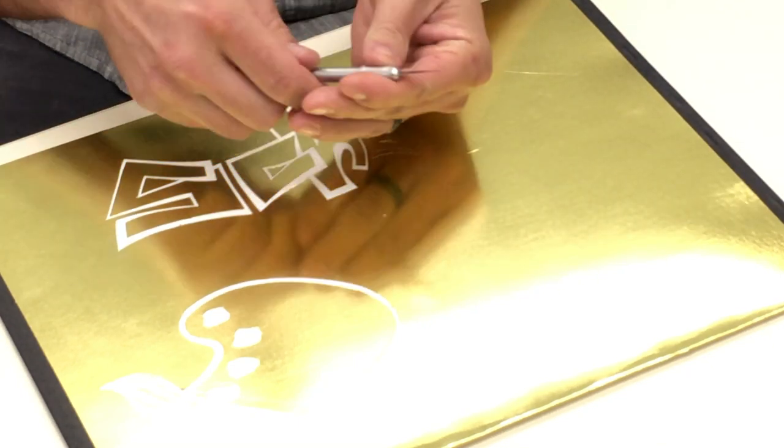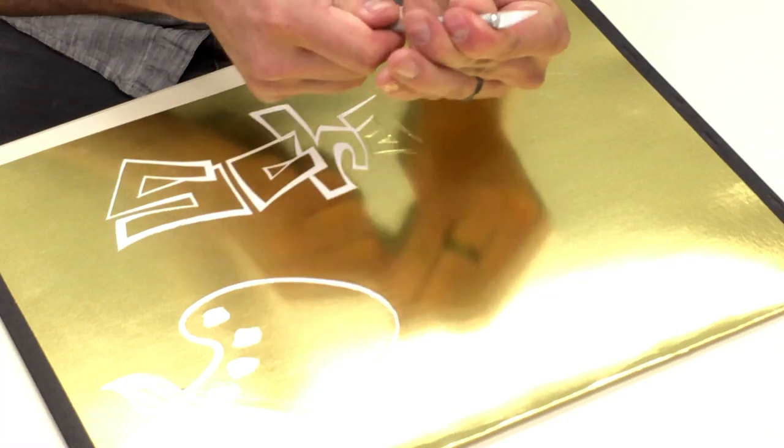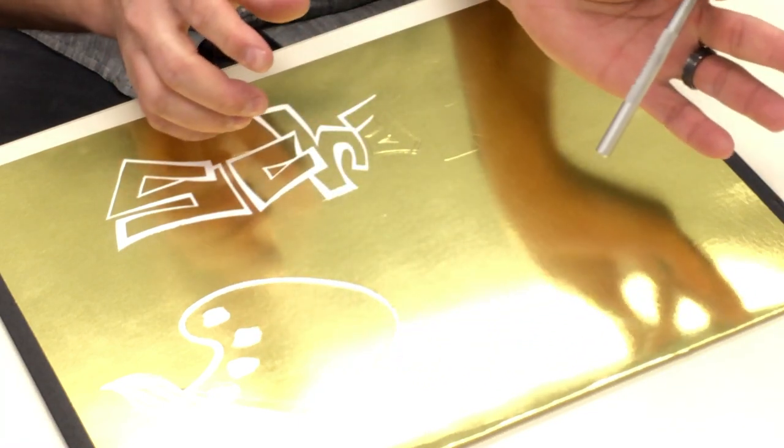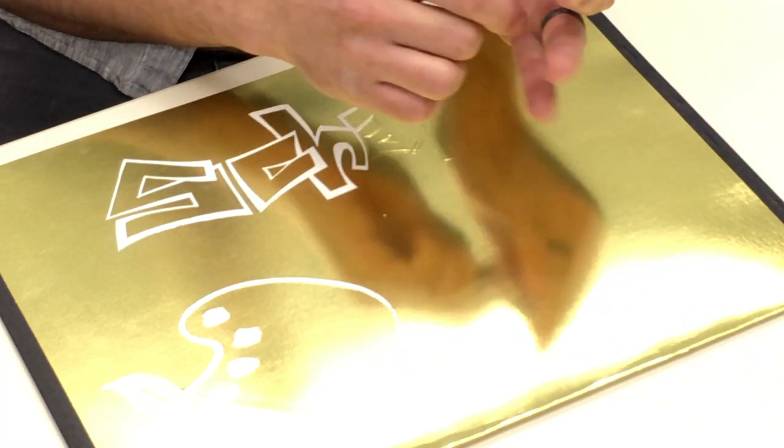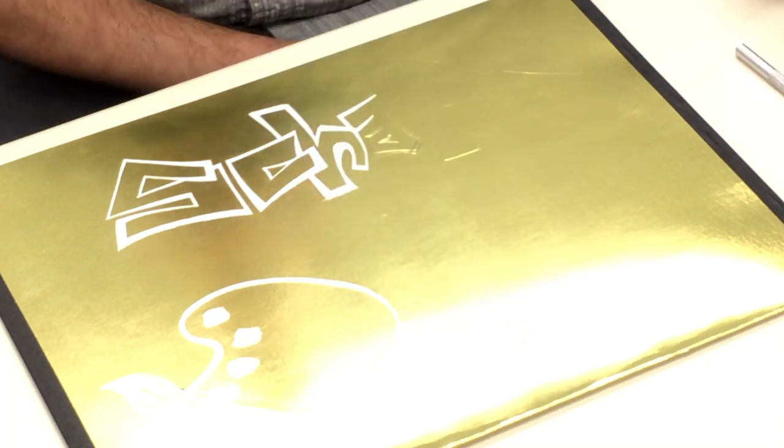When you're using the X-Acto blades, if they ever become loose, make sure they're tight. You hold this top portion and then turn the bottom clockwise.